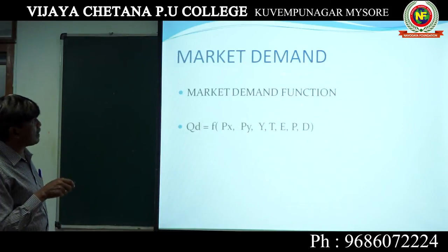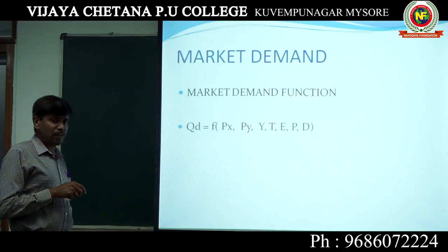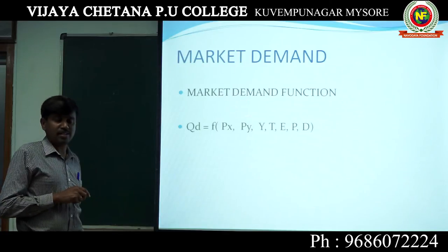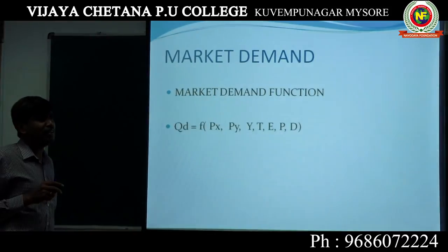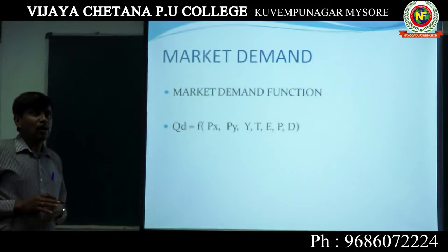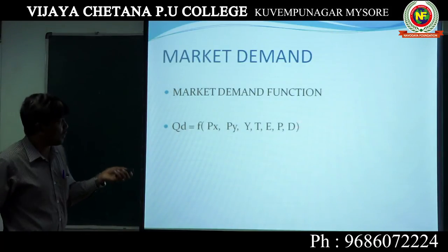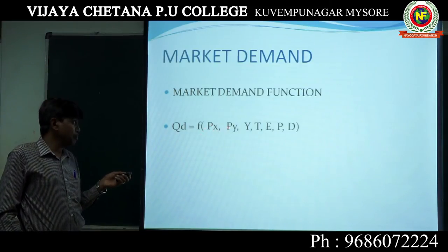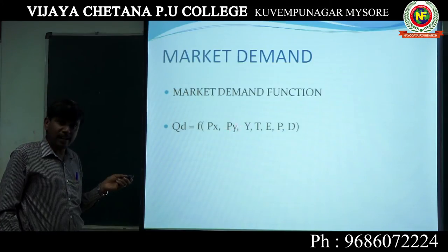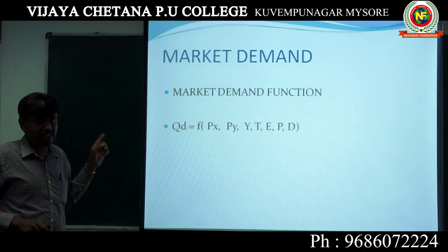Next we shall understand market demand. In the previous slide, we saw the determinants of demand for the individual person. Now we are going to understand the demand function in the case of market demand. There is a difference between individual demand and market demand. Market demand is nothing but the summation of all individual demands. In market demand, quantity demanded is a function of Px, PR, Y, T, E — the same factors as individual demand.